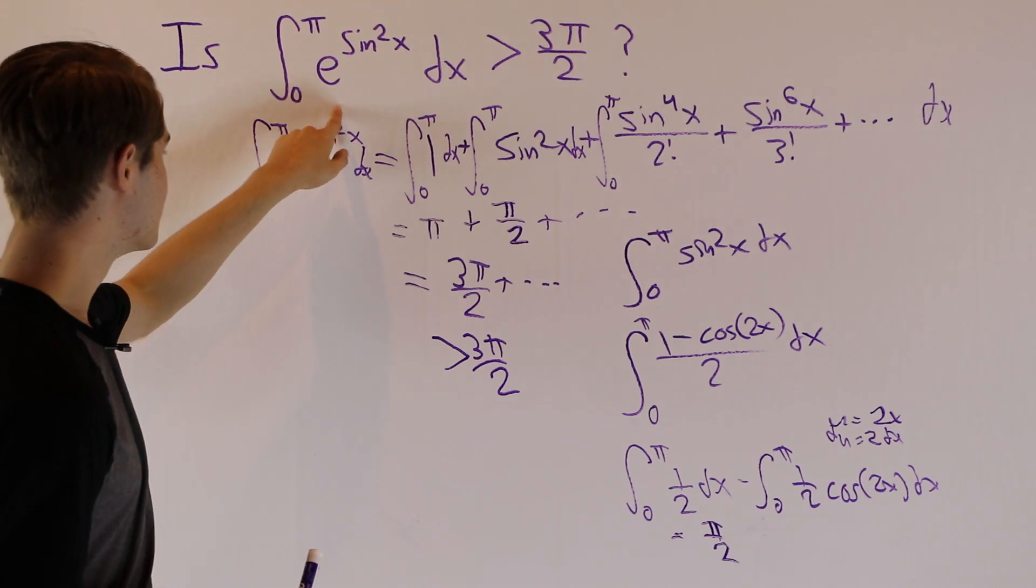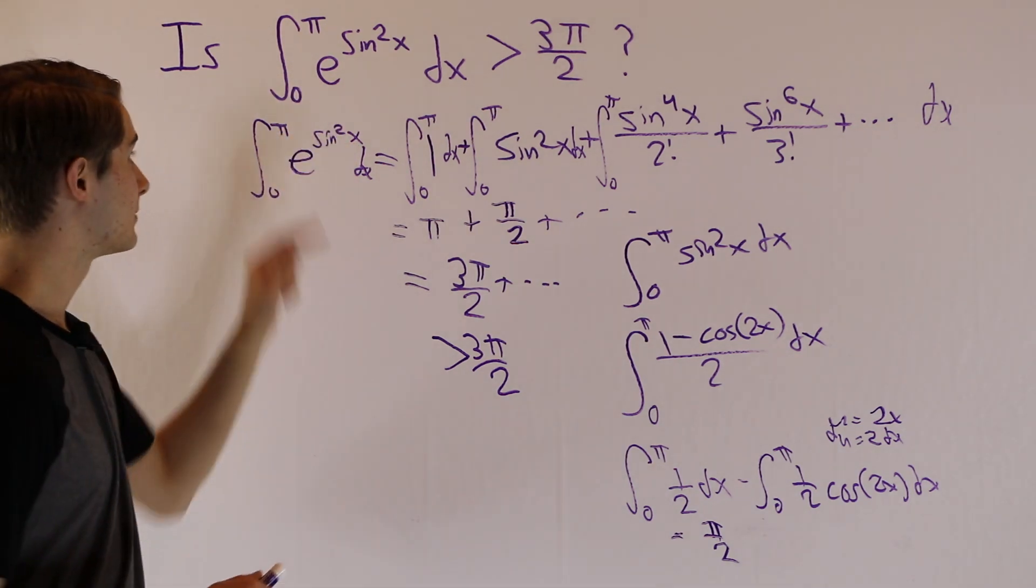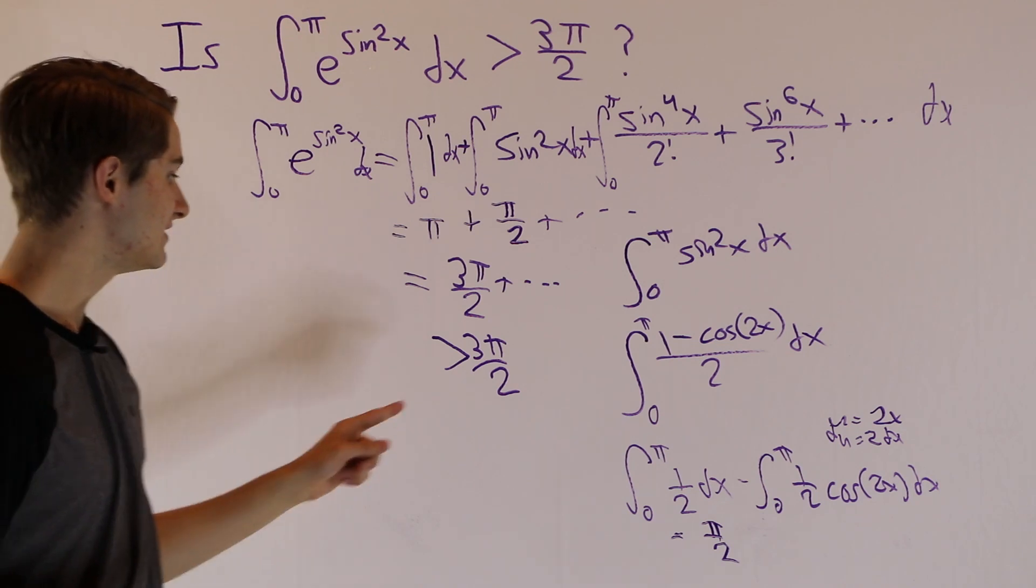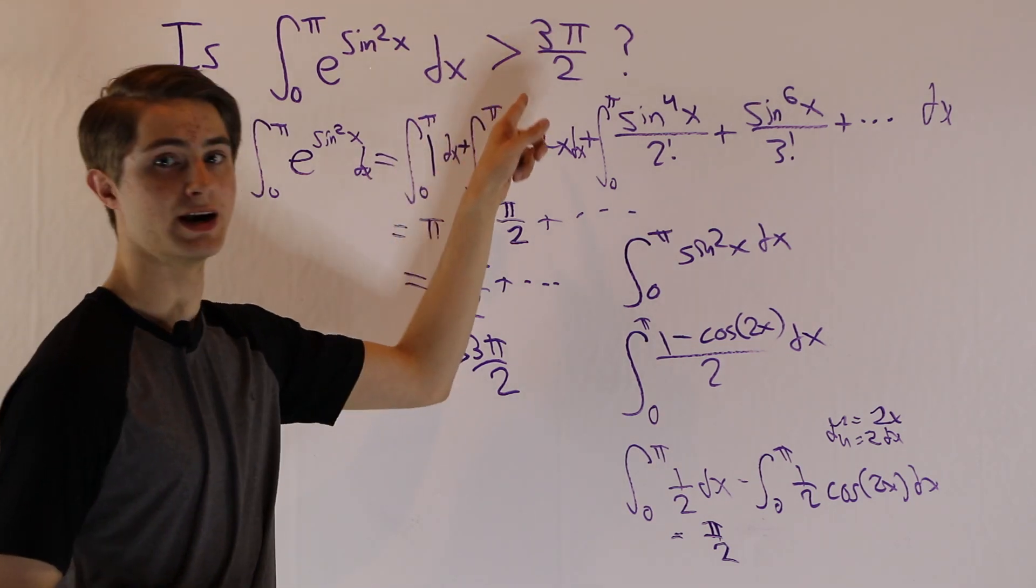So if we go back to our original question, we know that the integral from 0 to π of e to the sine squared x dx is indeed greater than 3π over 2. Thank you.